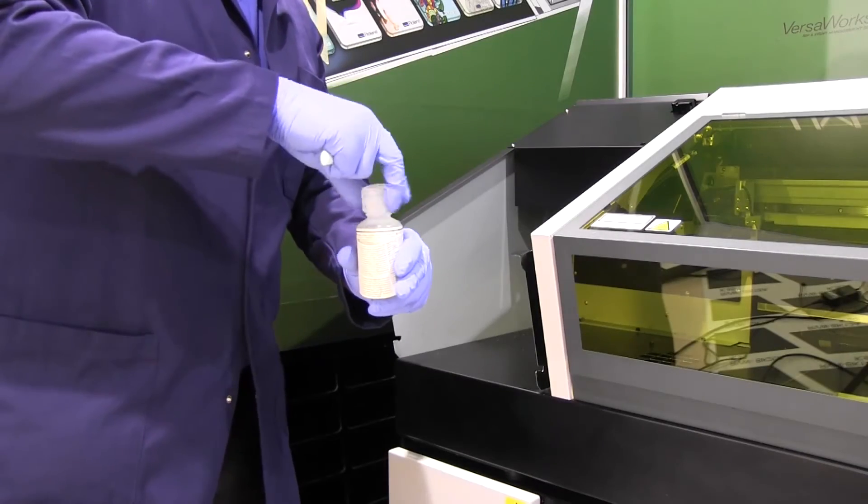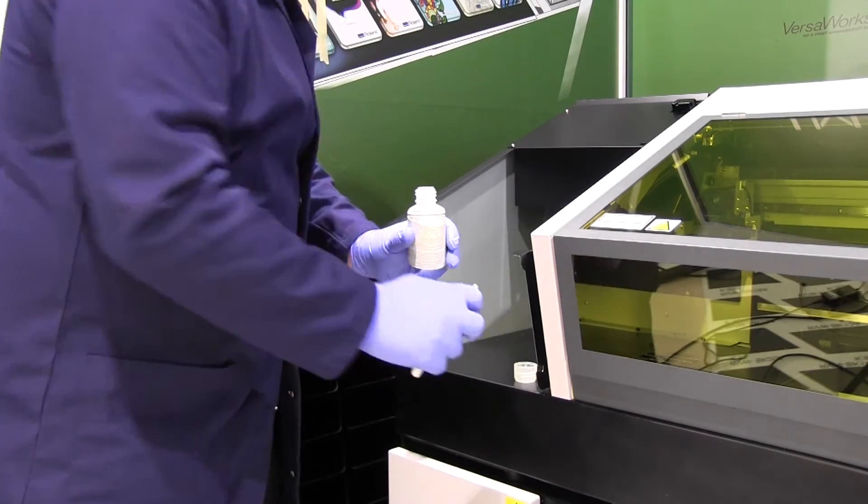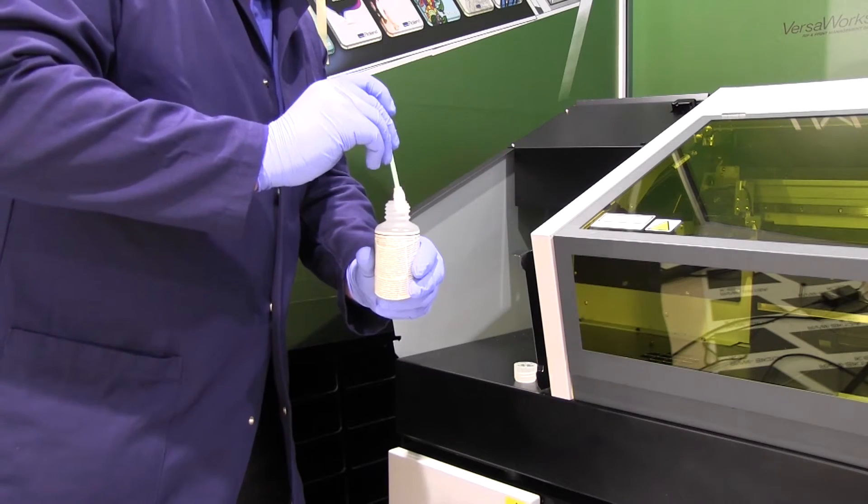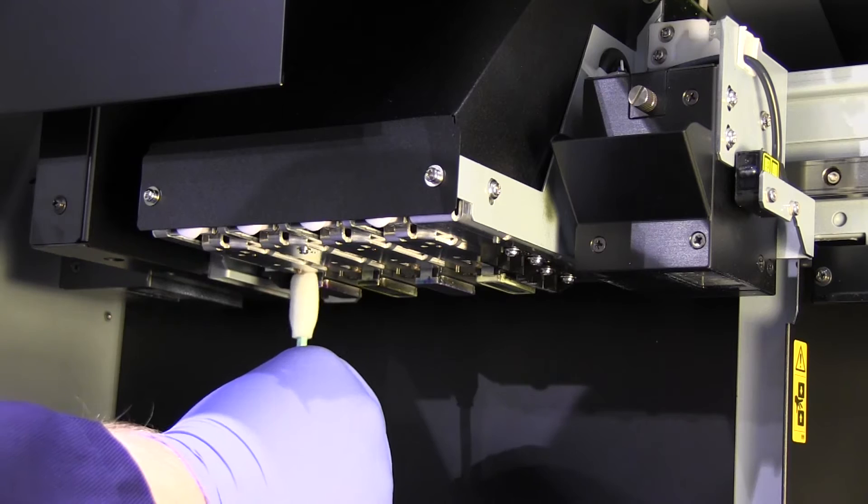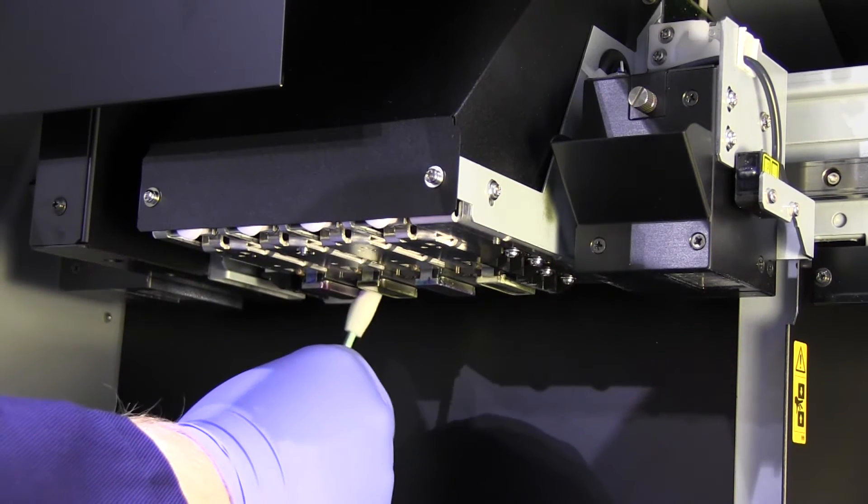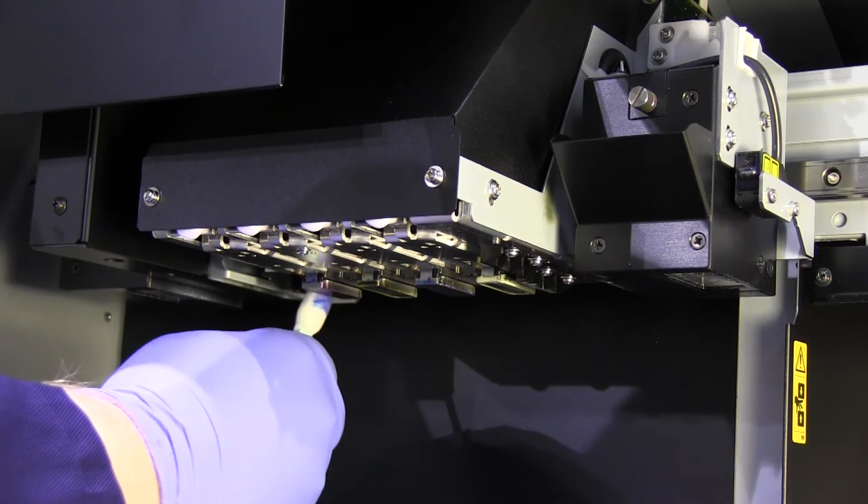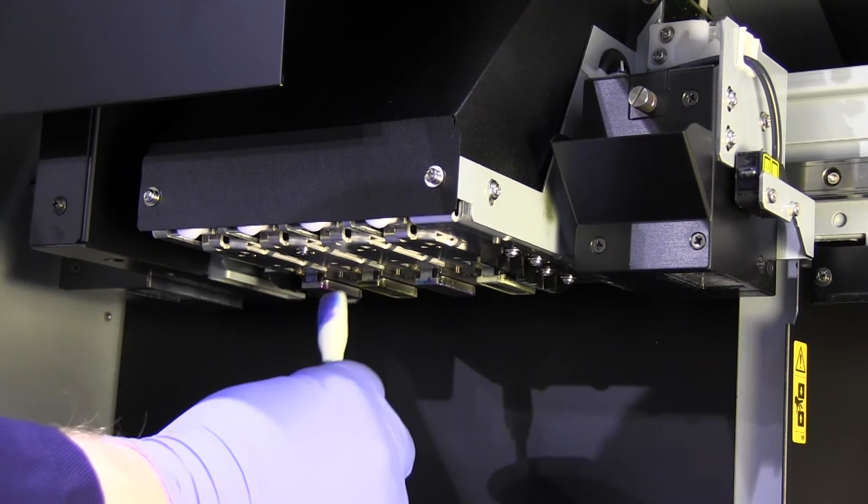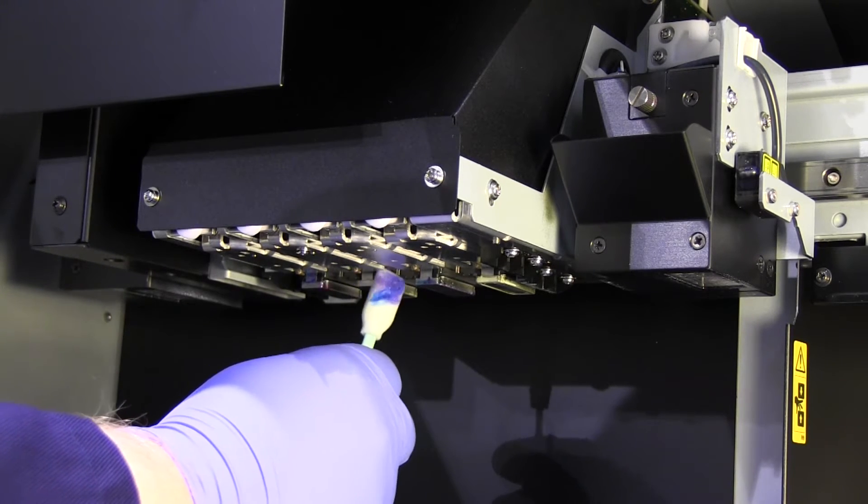Using the cleaning solution for the machine, dip a cleaning swab into the bottle and wipe off any excess. Here we're going to clean the print head surrounds. We are looking to clean off any excess ink from the print head frame and the black plastic head surround. Note that we do not clean the printhead surface.